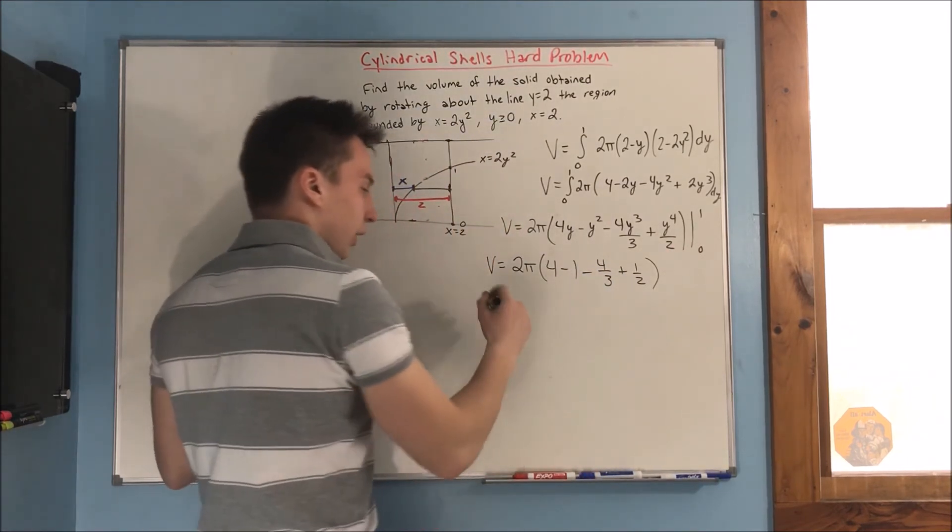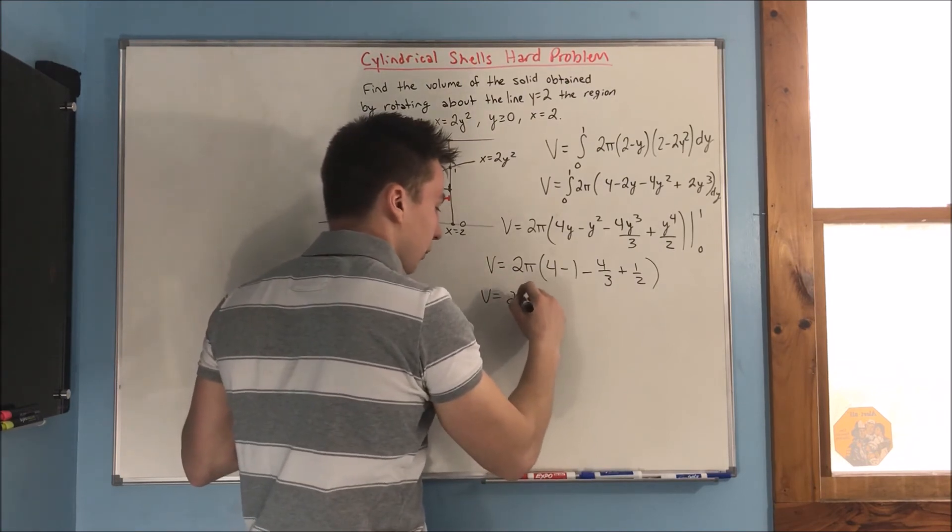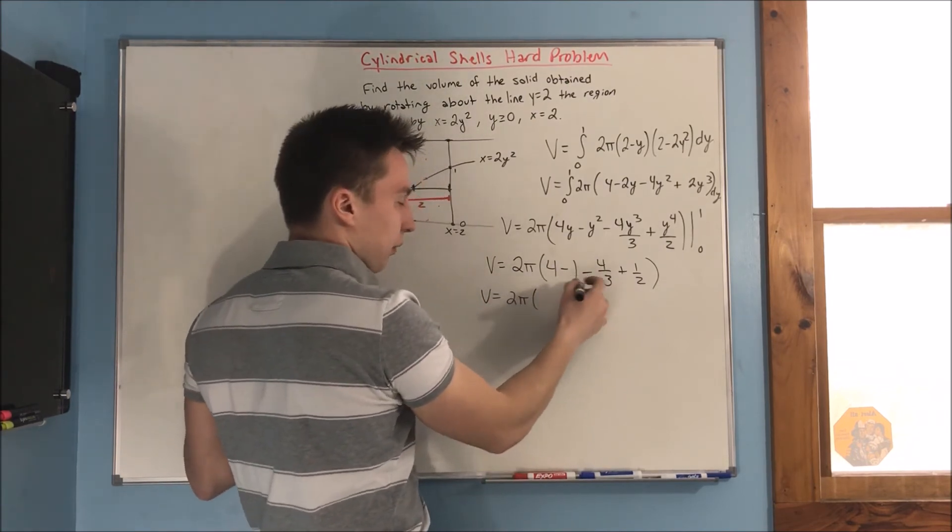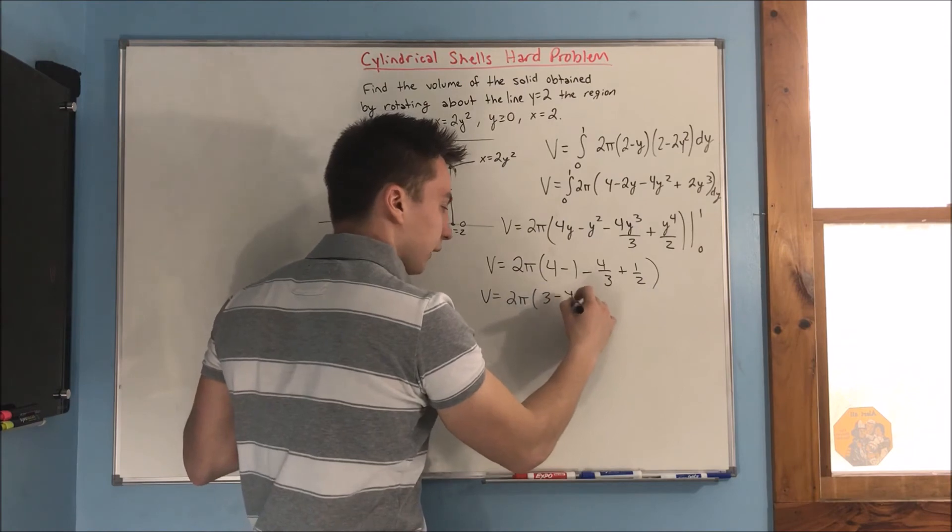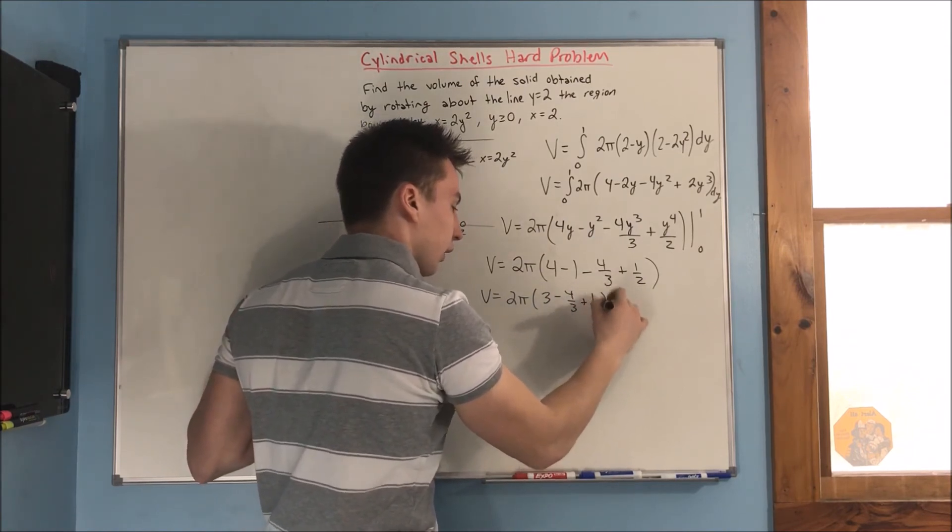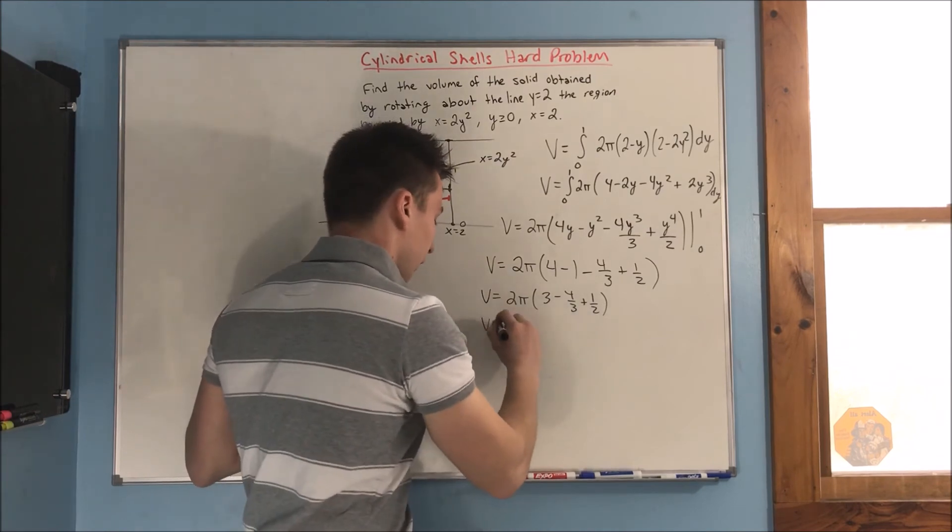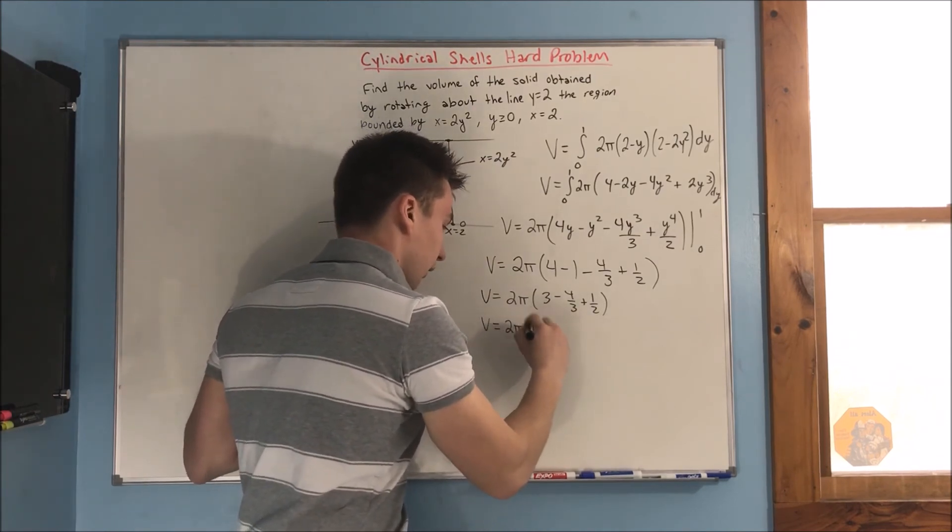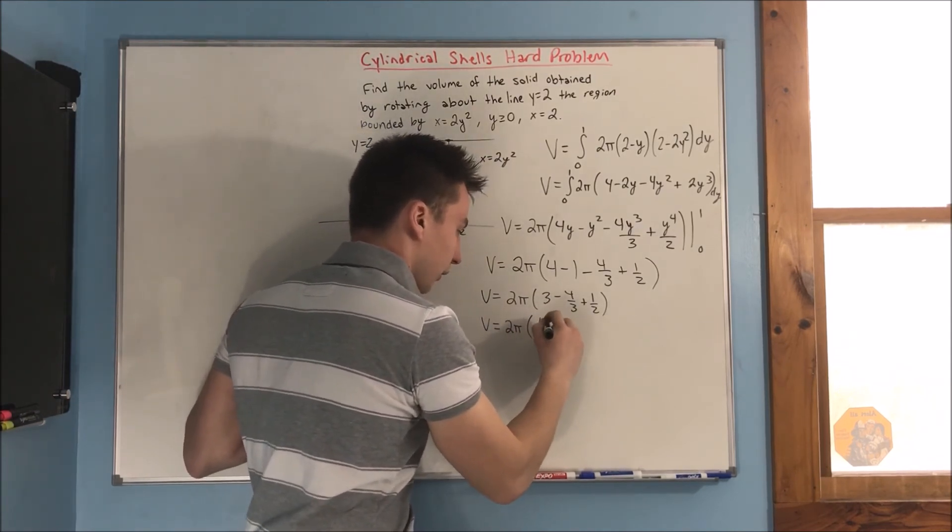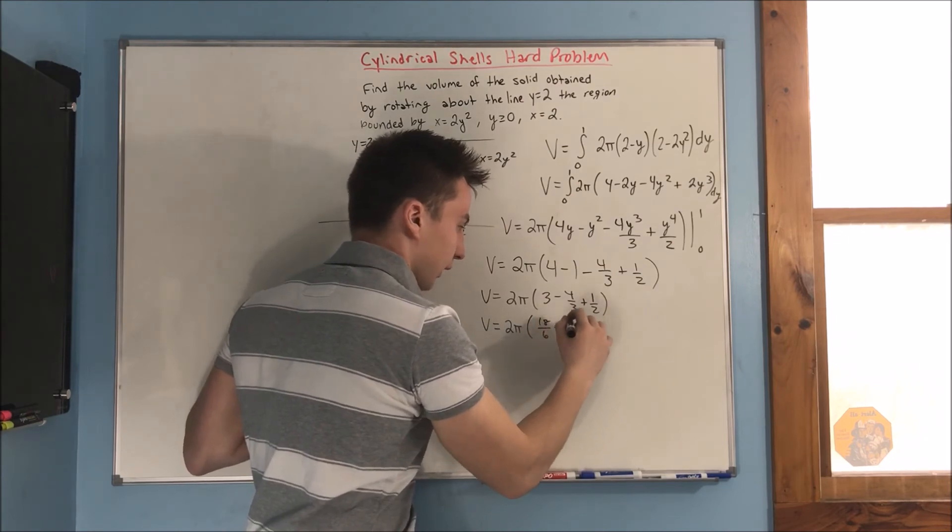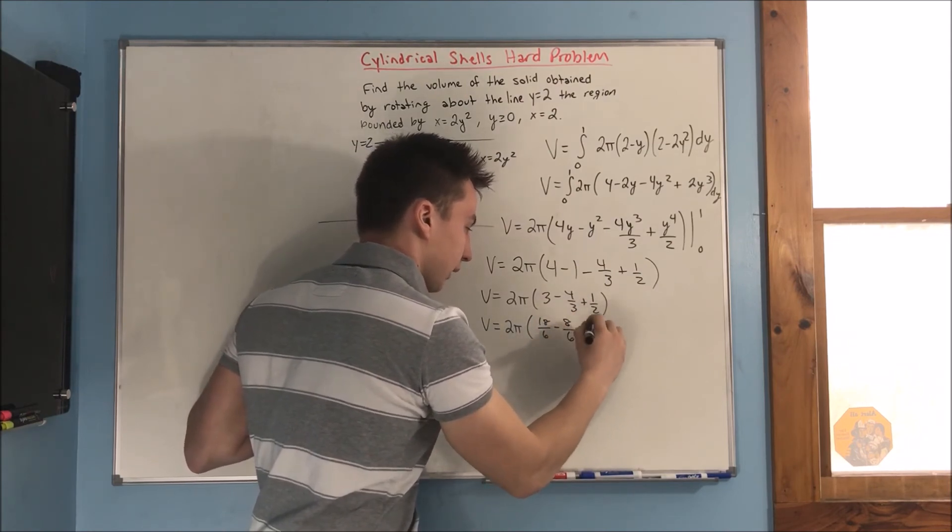Okay? So, we'll simplify that a little bit. It's going to be 2 pi times a 3 minus 4 thirds plus 1 half. Alright, lowest common denominator here is going to be 6. So, volume equals 2 pi times a 18 over 6 minus 8 over 6 plus 3 over 6.